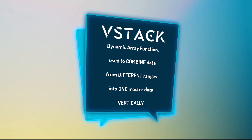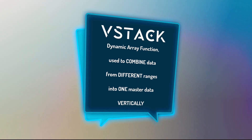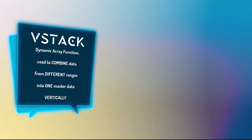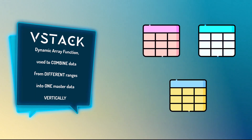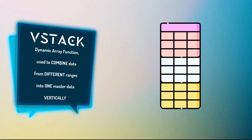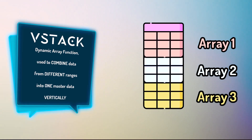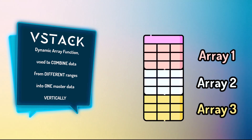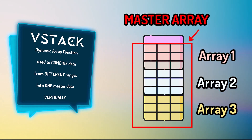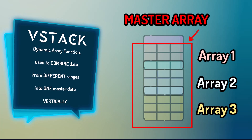The first dynamic array formula we'll be using is VSTACK. It is a function in Excel that allows you to stack data from multiple ranges into a single range vertically, letting you combine data from different sheets into one master sheet effortlessly. Let me show you how.